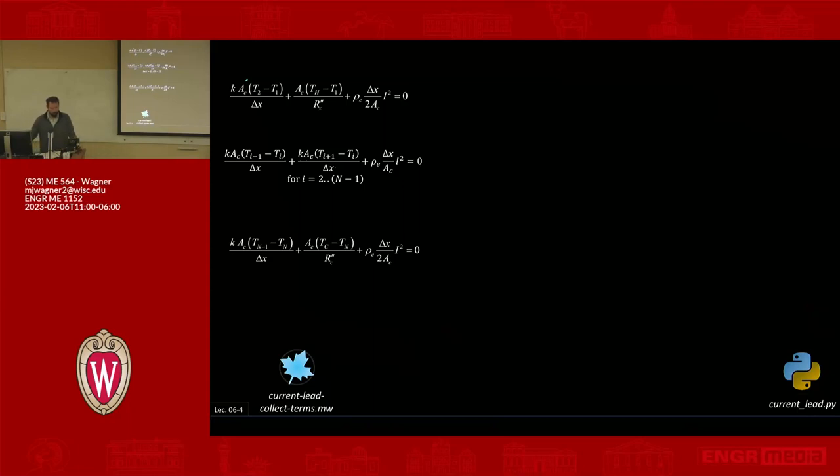What we want to do is, again, we're trying to get to a point where we have constants multiplying our variables. So our variables here are temperature, t1 through tn. We need to find all the constants that are multiplying those and put them in the matrix. So let's take the first node, for example, up here.